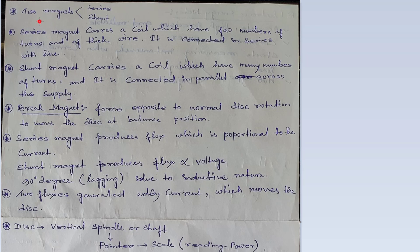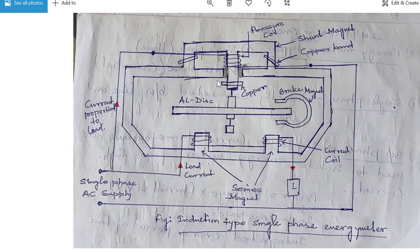Jaisi ki figure mein do magnet dikh raha hai. Two magnets are used: one series and one shunt. Figure mein dekhte hai kahan kahan pe hai magnet. Ek wala ek magnet hai, aur ek wala ek magnet hai. Do magnet connected rehta hai. Ek magnet series mein connected hai, aur ek magnet shunt mein connected hai. This is the shunt magnet and this is the series magnet.